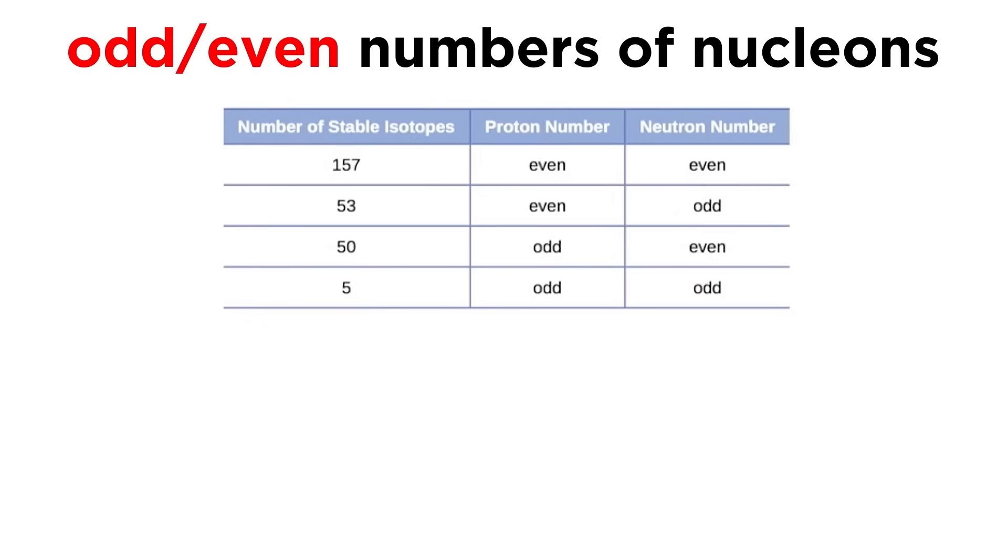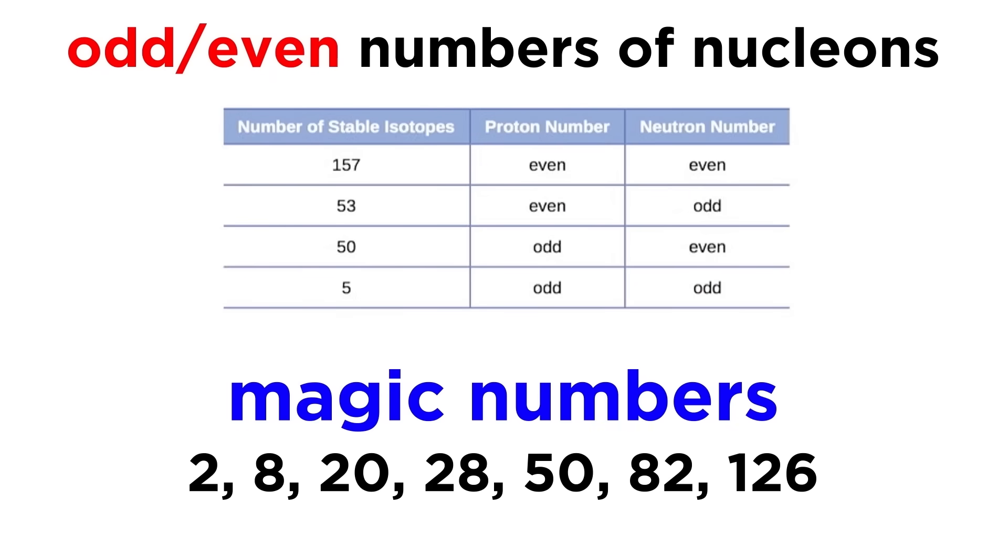In addition to this preferred ratio, we can see that nature prefers to have both protons and neutrons present in even numbers, as 157 out of the total 265 have even numbers of both, and only 5 of these nuclei have odd numbers of both protons and neutrons. Even more specifically, there are certain magic numbers of nucleons that allow for a nucleus to be especially stable. So if a nucleus has a number of protons or neutrons equal to one of these magic numbers, it will be very stable, and even more so if both of them are present in magic numbers, which we would call double magic.